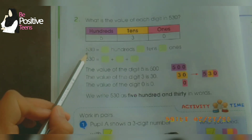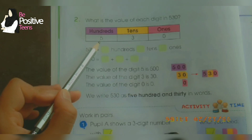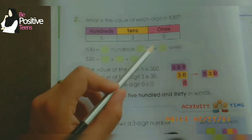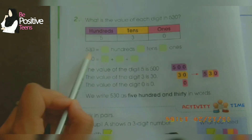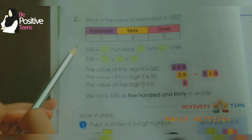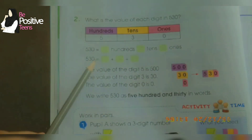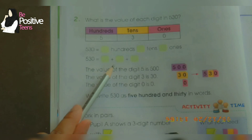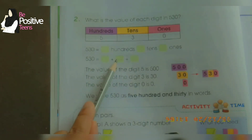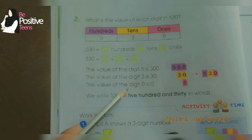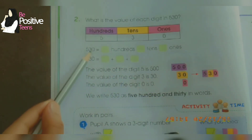In the hundreds place, which digit is there? There is 5, so 5 stands as hundreds — we write 5 over here. Then in the tens place, which digit stands as tens? 3 stands as tens — we write 3 over here. In the ones place there is no ones, that means 0 — we write 0 over here. Similarly for 530 we elaborate further: 500 plus 30 plus 0. The value of digit 5 is 500, the value of digit 3 is 30, and the value of digit 0 is zero.